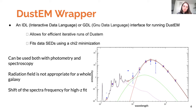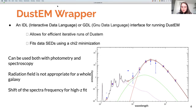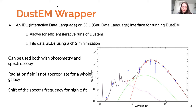Here on the side you can see a fit: the blue data points are photometry and the black is the fitted spectrum, the fitted SED. You can also see these squares, which are the expectation of the model for the photometry bands as well.